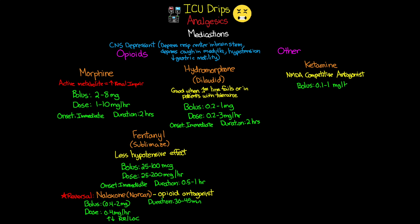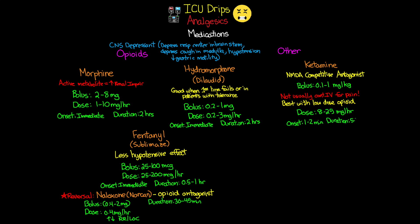Ketamine can be given as a bolus with a dose usually from 0.1 to 1 milligram per kilogram. We can use ketamine in a continuous infusion, but importantly we're not typically using it as a continuous infusion for pain relief alone — ketamine works best when combined with a low-dose opioid. When given in continuous IV form, the dose is 8 to 25 milligrams per hour. Ketamine has an onset of about one to two minutes and a duration of only five to ten minutes. Patients using ketamine are at risk for disorientation and hallucinations.